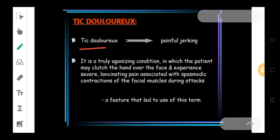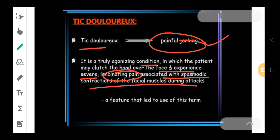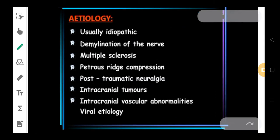Tic Douloureux means painful jerking of the body or of the face particularly. It is a truly agonizing condition in which the patient may clutch the hand over the face and experience severe lancinating pain associated with spasmodic contraction of the facial muscles during the attack. What are the particular etiology which could be responsible? There could be a number of etiologies. Some etiological reasons could be as simple as blowing of the wind or maybe whistling or maybe laughing or smiling.